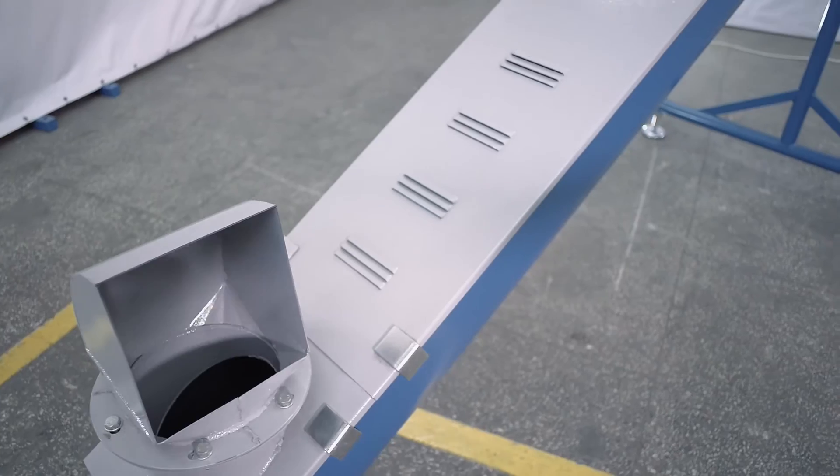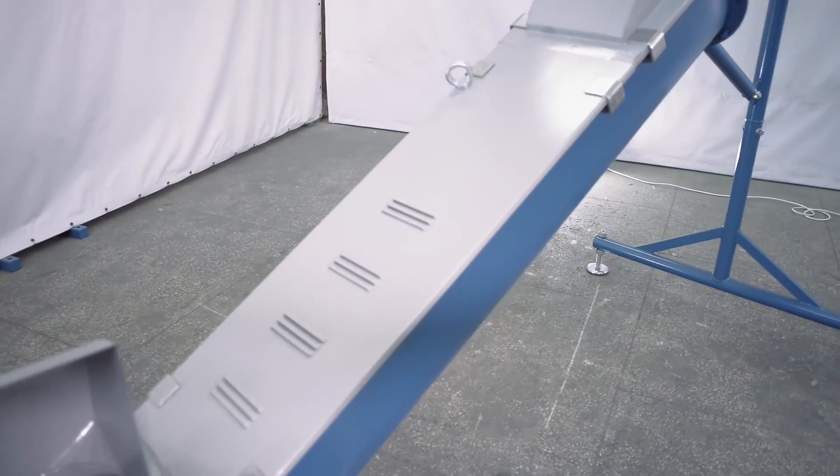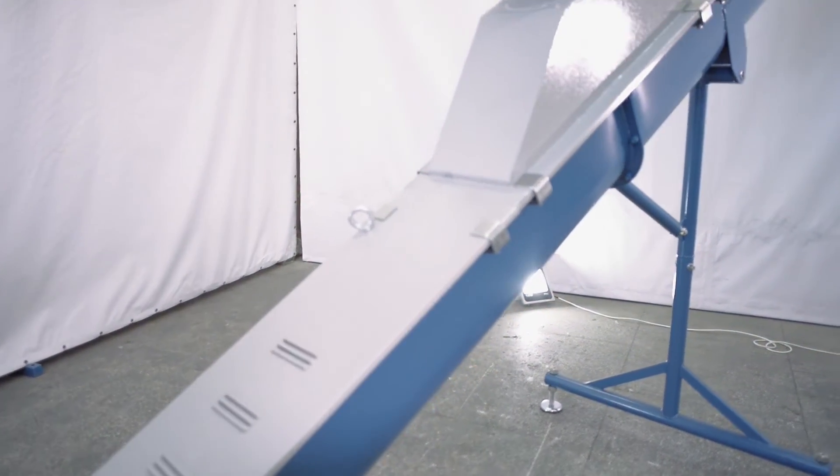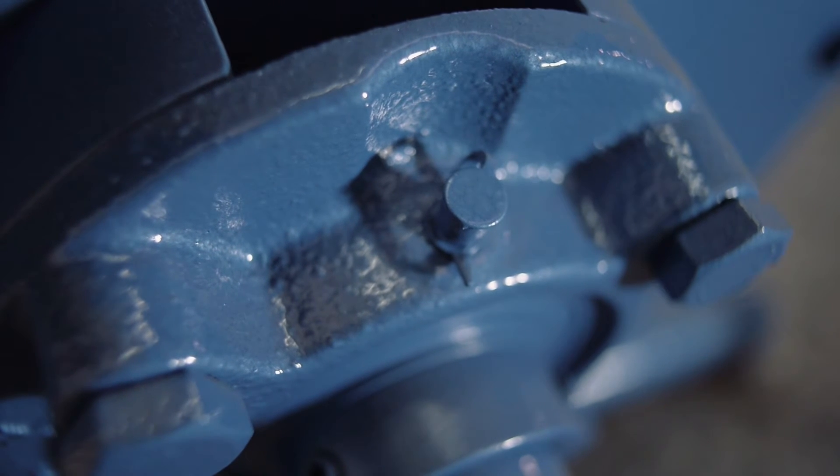How to set up the screw feeder? Pre-operation stage. First of all, inspect equipment for foreign matter prior to starting the screw feeder. Check grease availability in the bearing assembly.